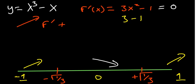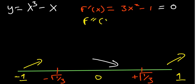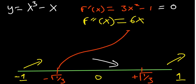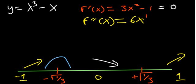Now we use the second derivative to determine whether each turning point is a minimum or maximum. The second derivative is 6x. Plugging in the negative turning point gives a negative value, telling us that point is a maximum. Plugging in the positive turning point gives a positive value, telling us that point is a minimum.